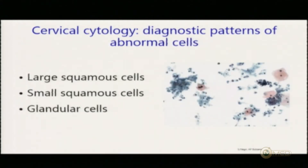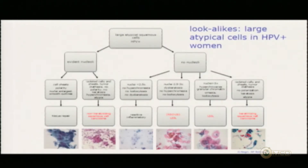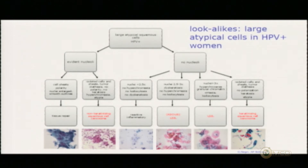Anyway, we are going to discuss these cells now. Of course, the first thing to do, as usual, is to decide what pattern you are dealing with. In that case, of course, we are speaking about large squamous cells. The differential diagnosis is quite simple. You have large atypical squamous cells, and the first decision is: do you see nucleoli or do you not see nucleoli? Because if you see nucleoli, the main differential diagnosis will be between tissue repair and squamous cancer, non-keratinizing type.